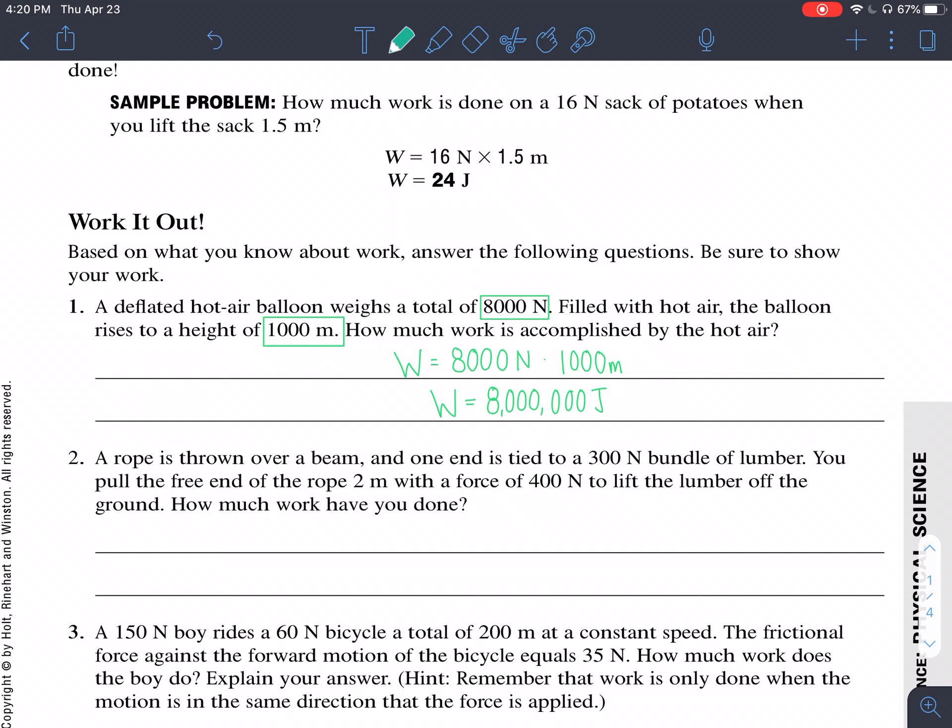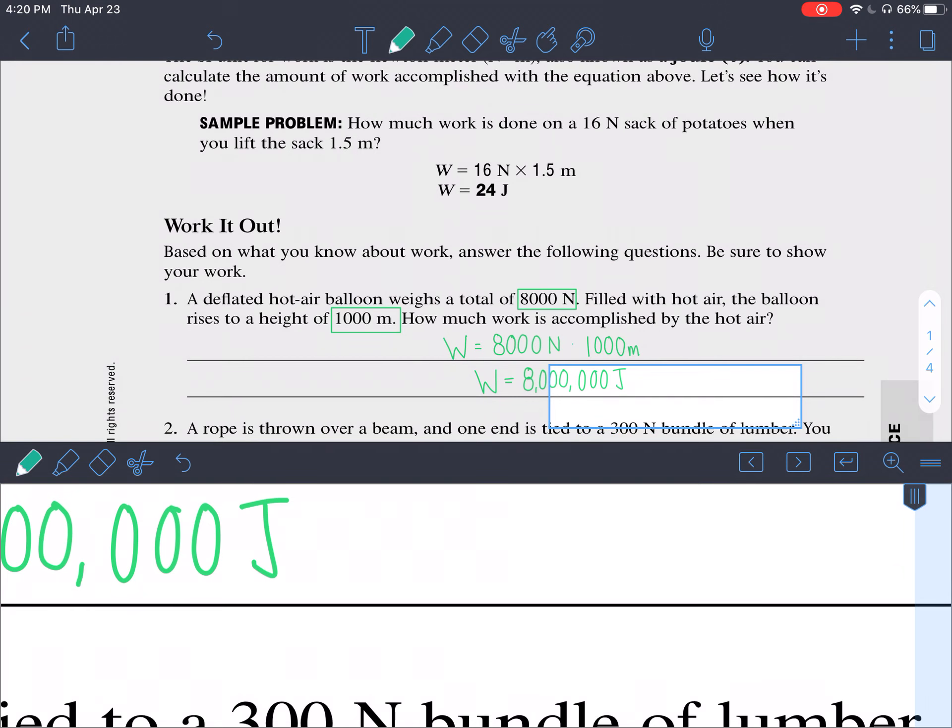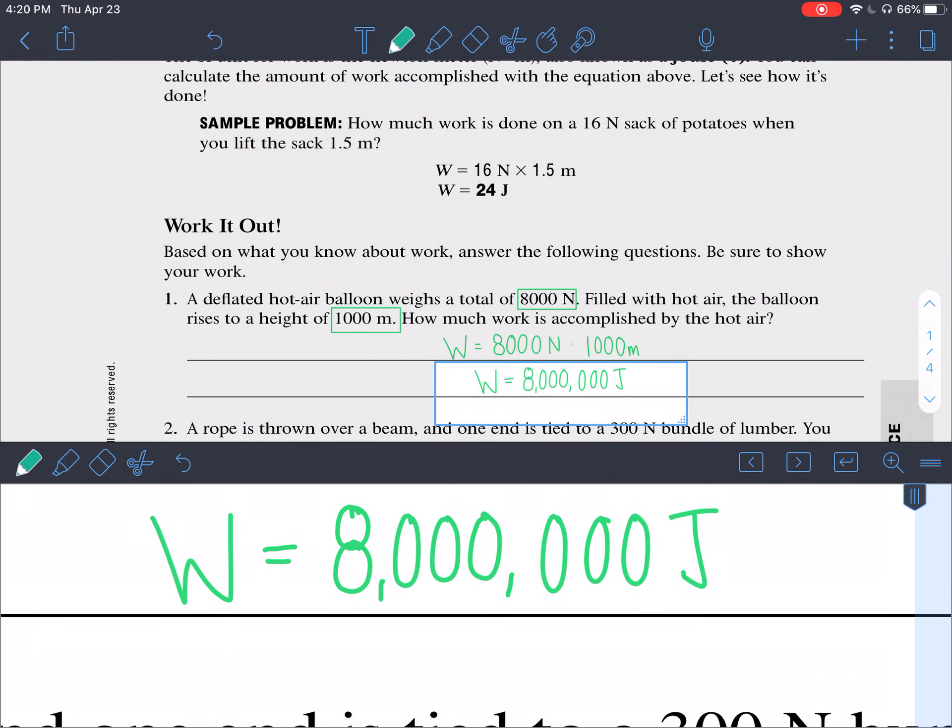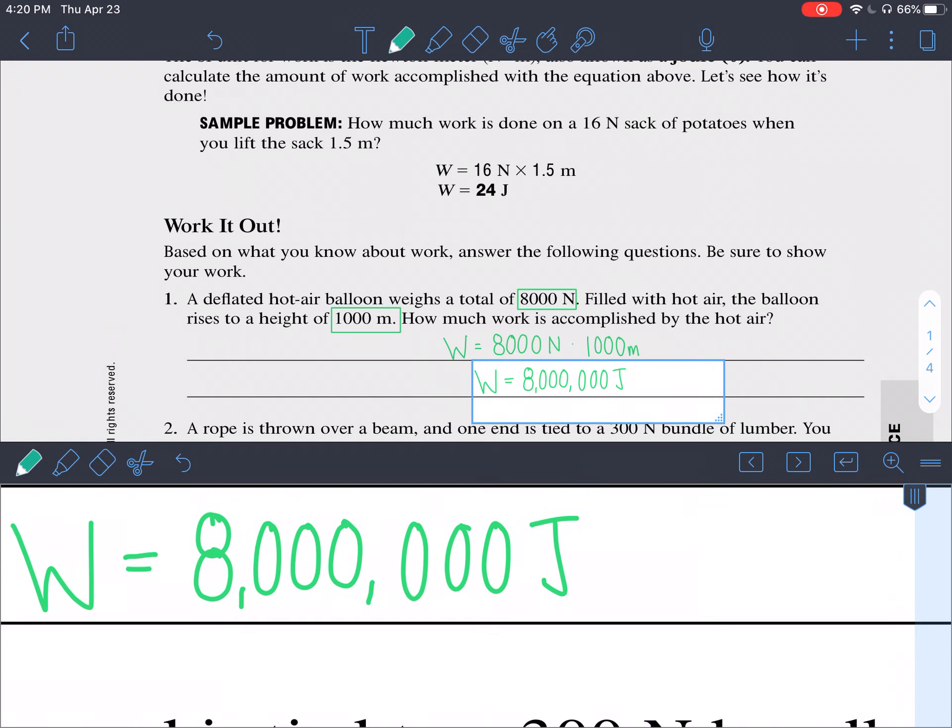The first one was pretty straightforward. You're given a force, you're given a displacement, multiply those together, you get 8,000 or 8 million joules. And just for practice we're going to convert 8 million joules into kilojoules because you guys will definitely be converting between kilojoules and joules with the metric system and I want to get a little practice with that.